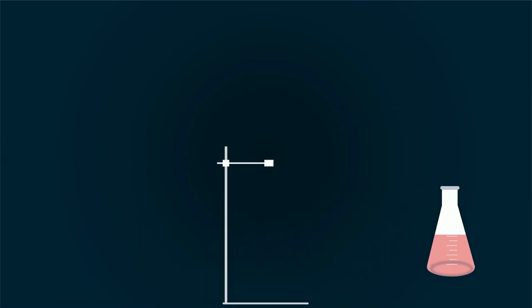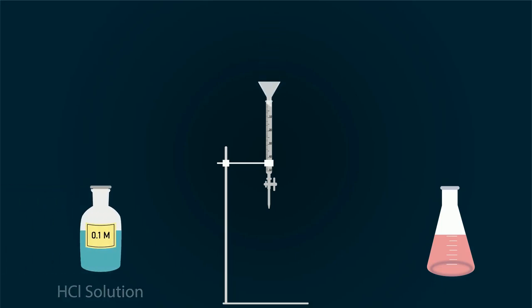Now take iron stand and tie the burette into it. Put funnel on the opening so you can add 0.1 molar HCl. Fill the burette up to the zero point with 0.1 molar HCl solution. Now take magnetic stirrer.